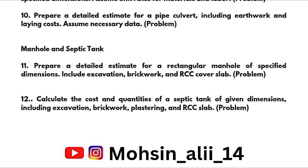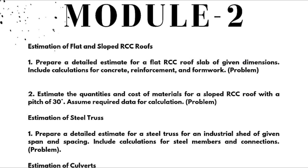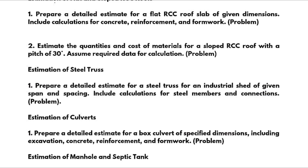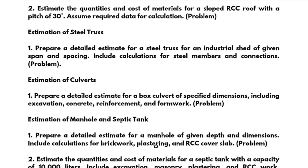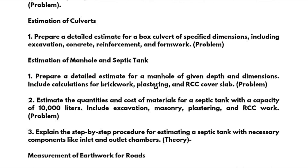Module 2 is also a problematic module. Problems include: prepare a detailed estimate for a flat RCC roof slab including calculations for concrete, reinforcement, and formwork. Estimate quantities and cost for a sloped RCC roof with a pitch of 30 degrees — assume required data. For steel truss estimation: prepare a detailed estimate for a steel truss for an industrial shed of given span and spacing, including calculations for steel members and connections. For culvert estimation: prepare a detailed estimate for a box culvert of specified dimensions including excavation, concrete, reinforcement, and formwork.